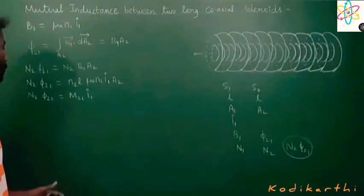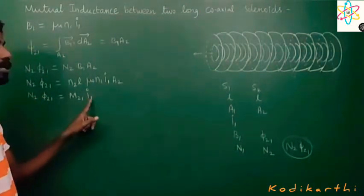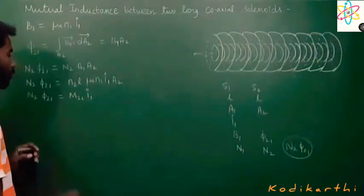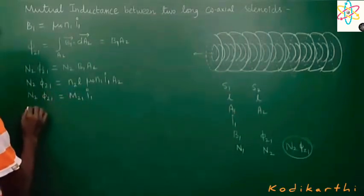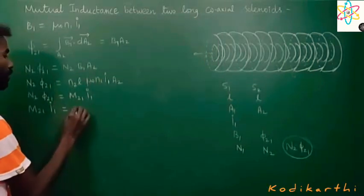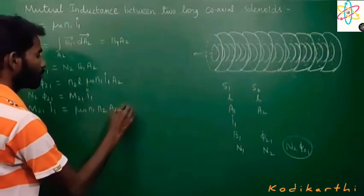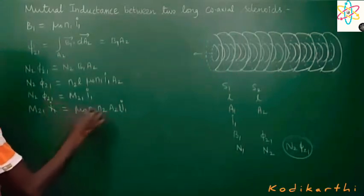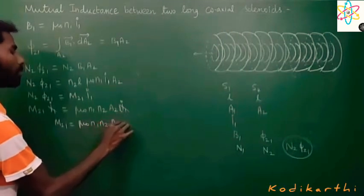The total flux linked to solenoid 2 is proportional to the current I₁. The flux is proportional to or equal to some constant times I₁. This constant is the mutual inductance M. So n₂Φ₂₁ divided by I₁ is equal to M₂₁, which equals μ₀n₁n₂A₂/L.